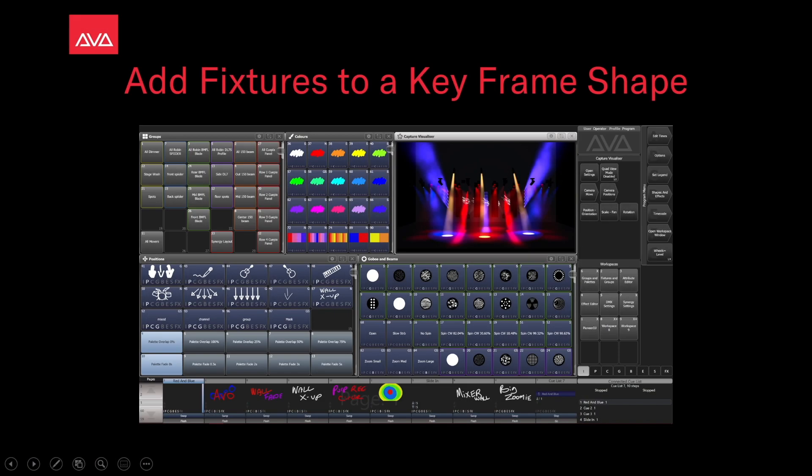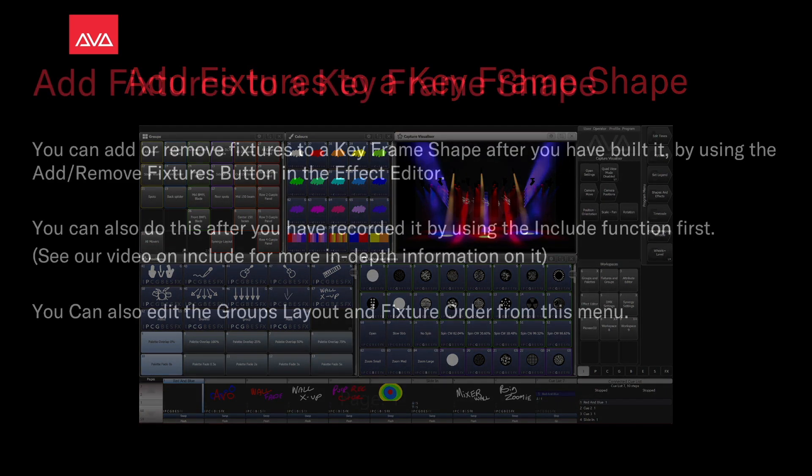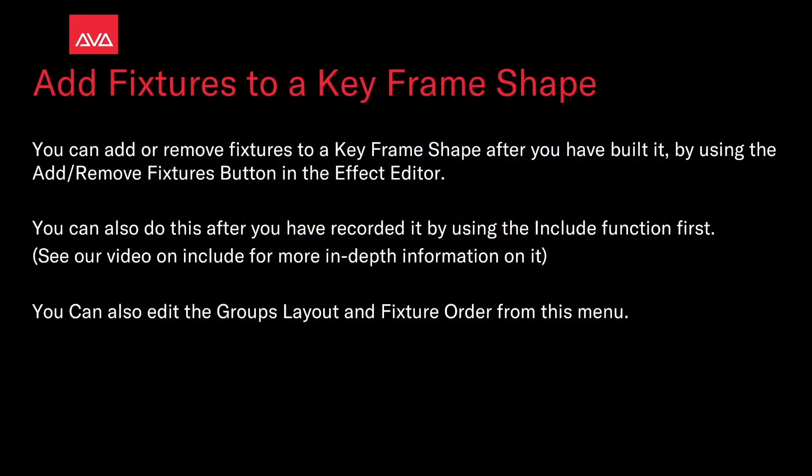Hey everybody and welcome back to Mission Control for a quick tips video. In this video we're talking about adding fixtures to a keyframe shape. You can add or remove fixtures to a keyframe shape after you have built it by using the add/remove fixture button in the effect editor.